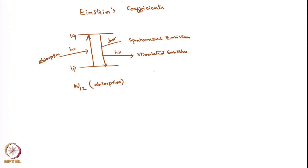W12 will depend on the number of molecules in state 1 and the radiation density at frequency nu, where this frequency is the same as h-nu. The proportionality constant is called B12 — that is the Einstein coefficient for absorption.